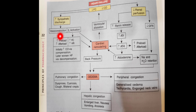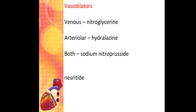Vasodilators act by reducing the vasoconstriction that causes increased preload and afterload. By producing vasodilation, they decrease preload and afterload, improving cardiac output. Various vasodilators can be used: nitroglycerin is a venous dilator, hydralazine is an arterial dilator, and nitroprusside has both venous and arterial effects. The choice depends on the clinical condition.